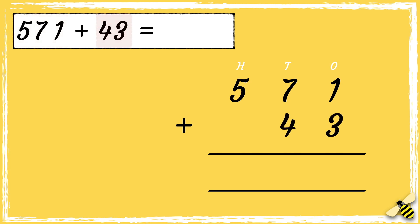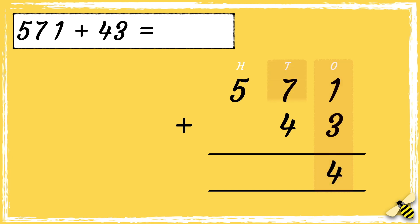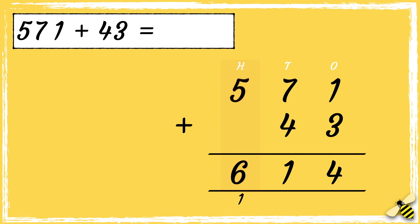Now that we're set up, we're ready to add. Pause the video to give you time to work out the answer. Press play when you're done. First we add the ones: one add three equals four. Then we add the tens: seven add four equals eleven. Then we add the hundreds: five add one equals six.